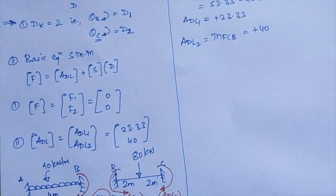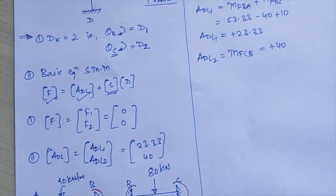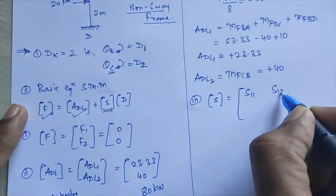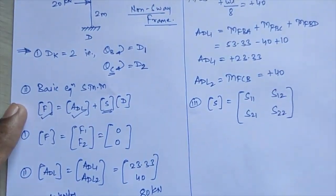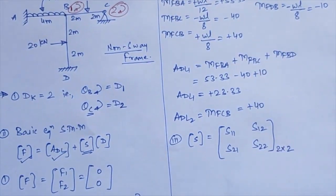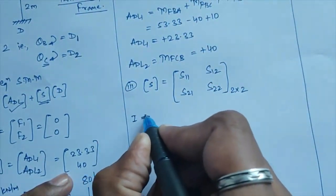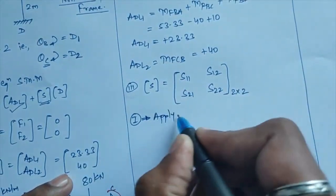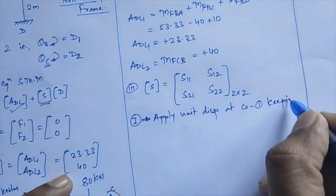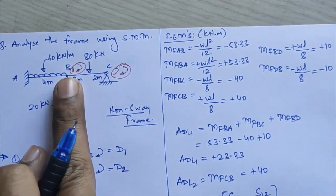The stiffness matrix S will be a 2×2 matrix — S11, S12, S21, S22 — because we have two redundants. If you have three redundants the matrix would be 3×3. In Roman I, we apply unit displacement at coordinate 1 while keeping all other coordinates fixed.